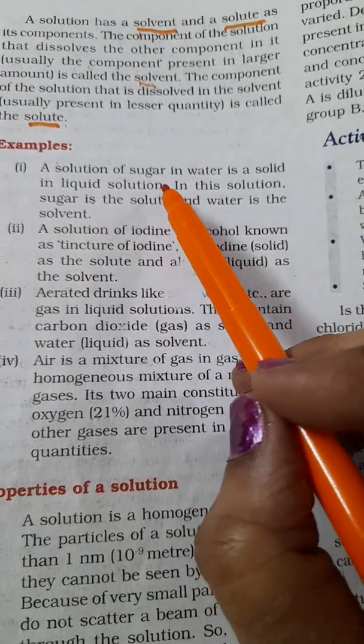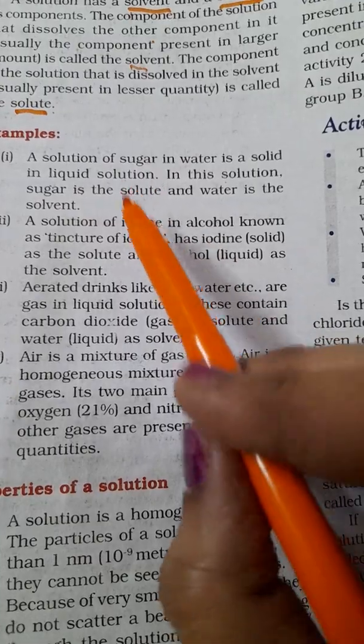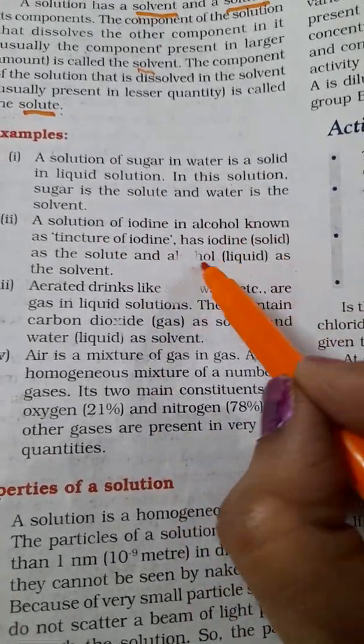Let us see some examples. Solution of sugar in water is called solid in liquid. Solid is sugar and liquid is water. Sugar is the solute and water is the solvent.